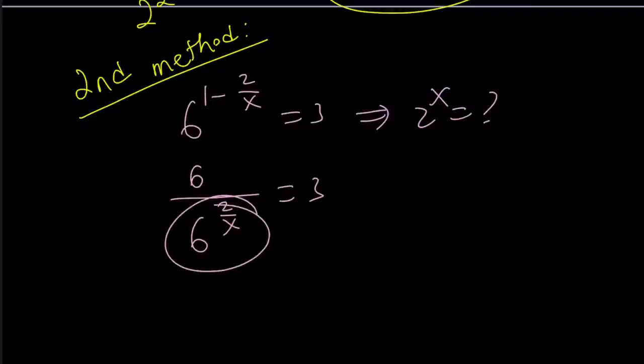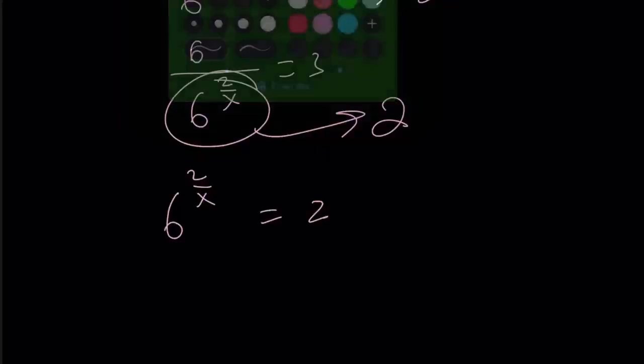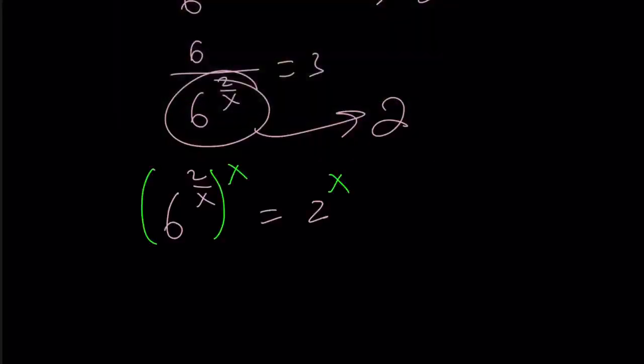6 divided by what number equals 3? The answer is 2. Okay. And then, from here, we got 6 to the power 2 over x equals 2, and then now is the time to raise both sides to the power x, and that's going to give us 36 equals 2 to the power x.